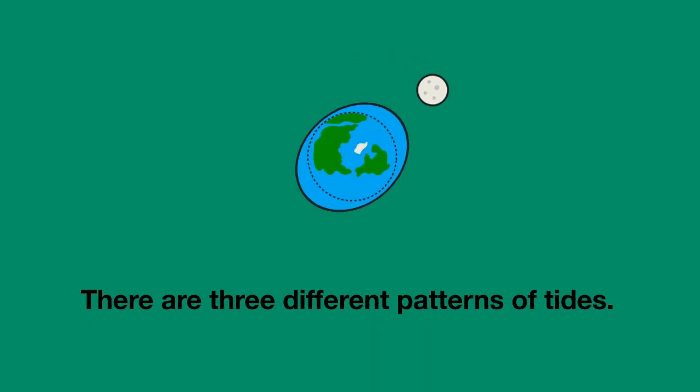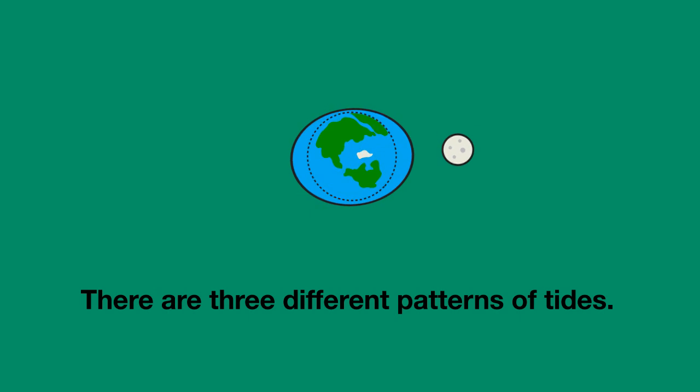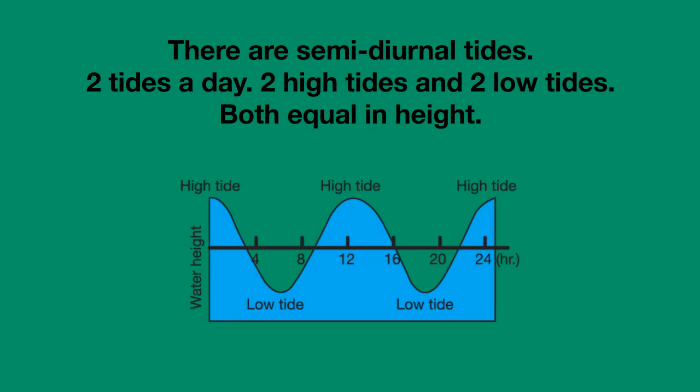In fact, there are three different patterns of tides. There are semi-diurnal tides — semi-diurnal means half day, so twice daily. This is a pattern of two tides a day: two high tides and two low tides, and they're both equal in height.